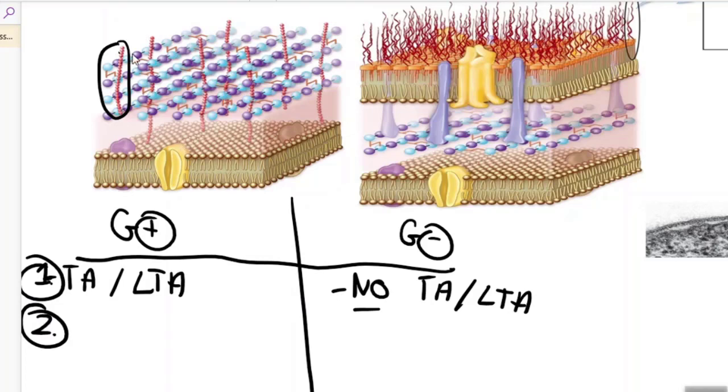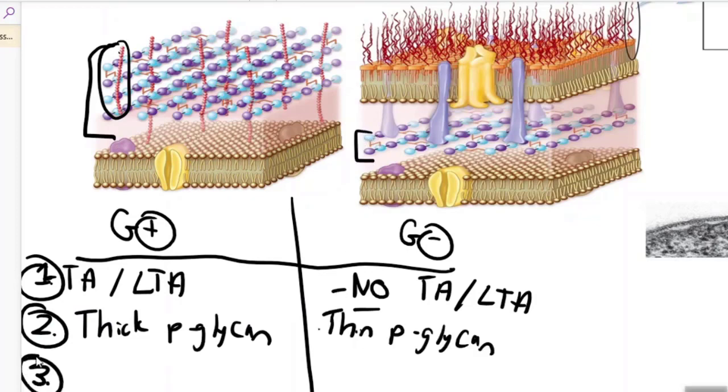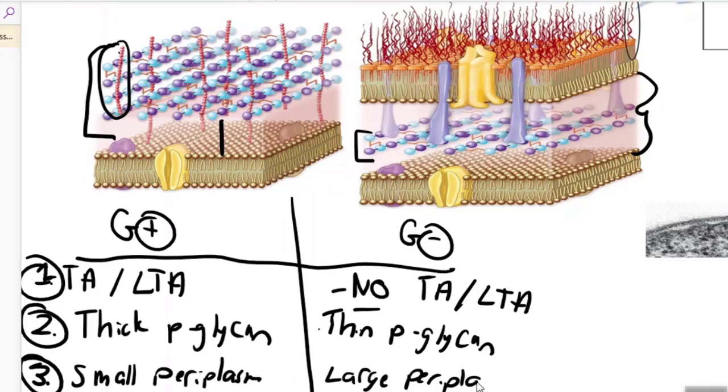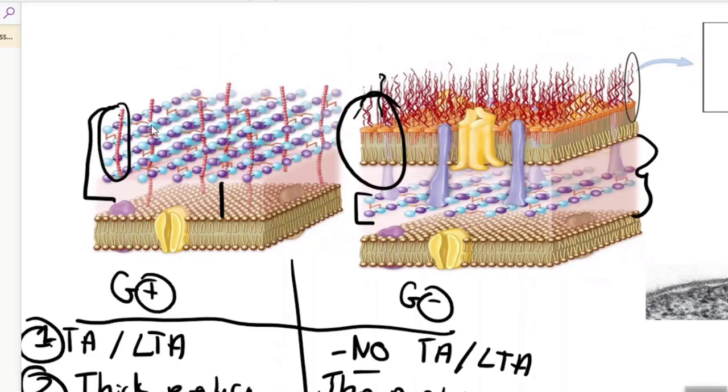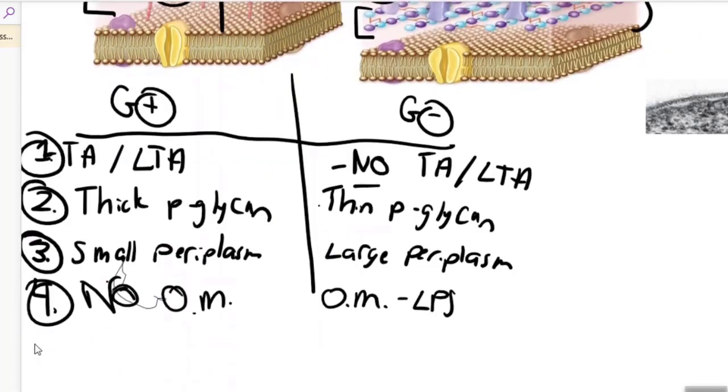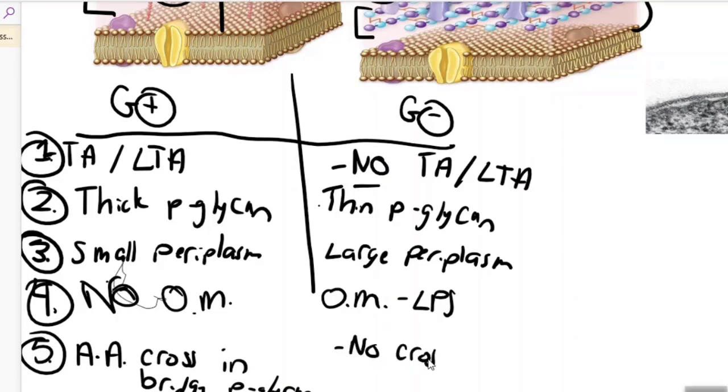Difference number two: gram-positive have a very thick peptidoglycan layer. Gram-negative, it's so tiny, very thin. A third difference: gram-negative bacteria have this huge periplasm, whereas gram-positive, it's so small. Remember, the periplasm is a gel-like space with a lot of proteins inside of it. A fourth difference: gram-negative bacteria have an extra outer membrane composed of LPS. In gram-positive, there's no outer membrane, there's only that one regular cell membrane. One other difference, remember from the first video, gram-positives have that extra amino acid cross-bridge in the peptidoglycan. In gram-negative, there's no cross-bridge, it's just a direct linkage.